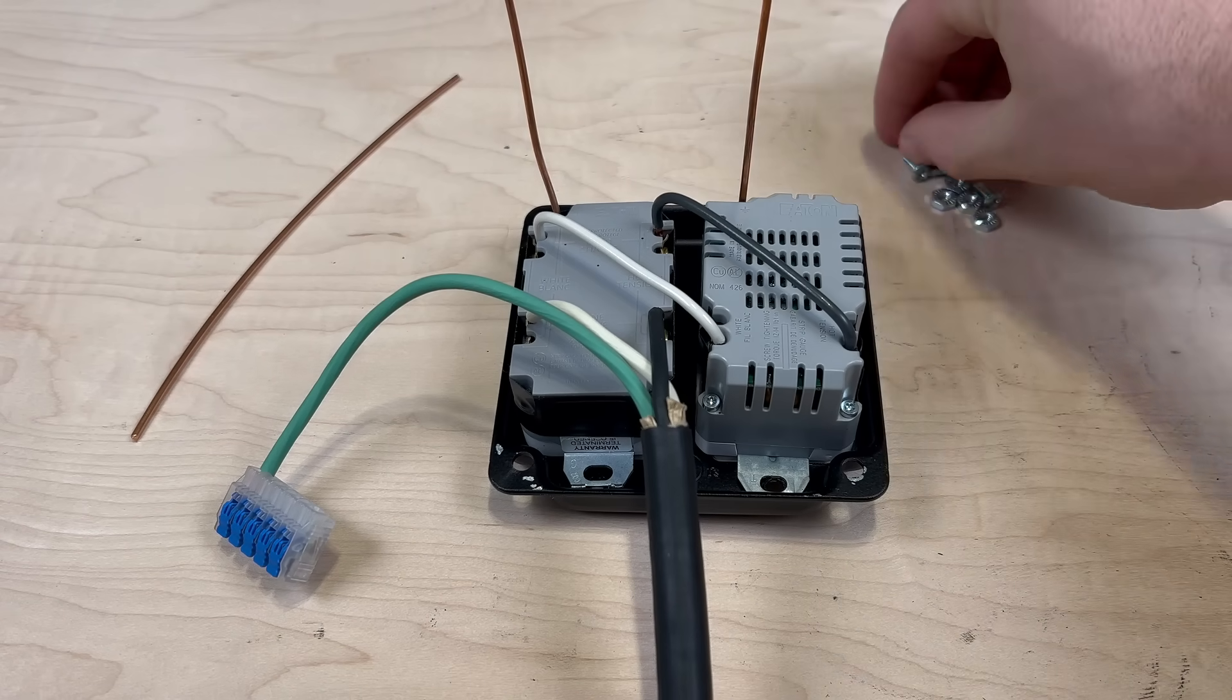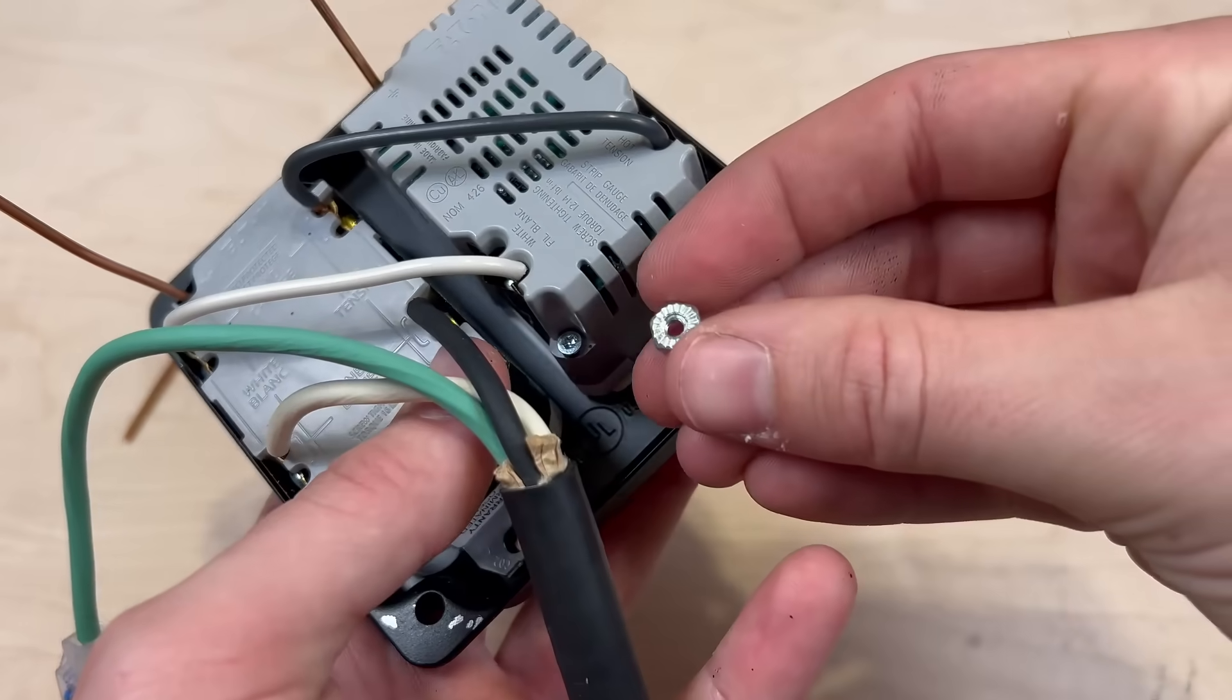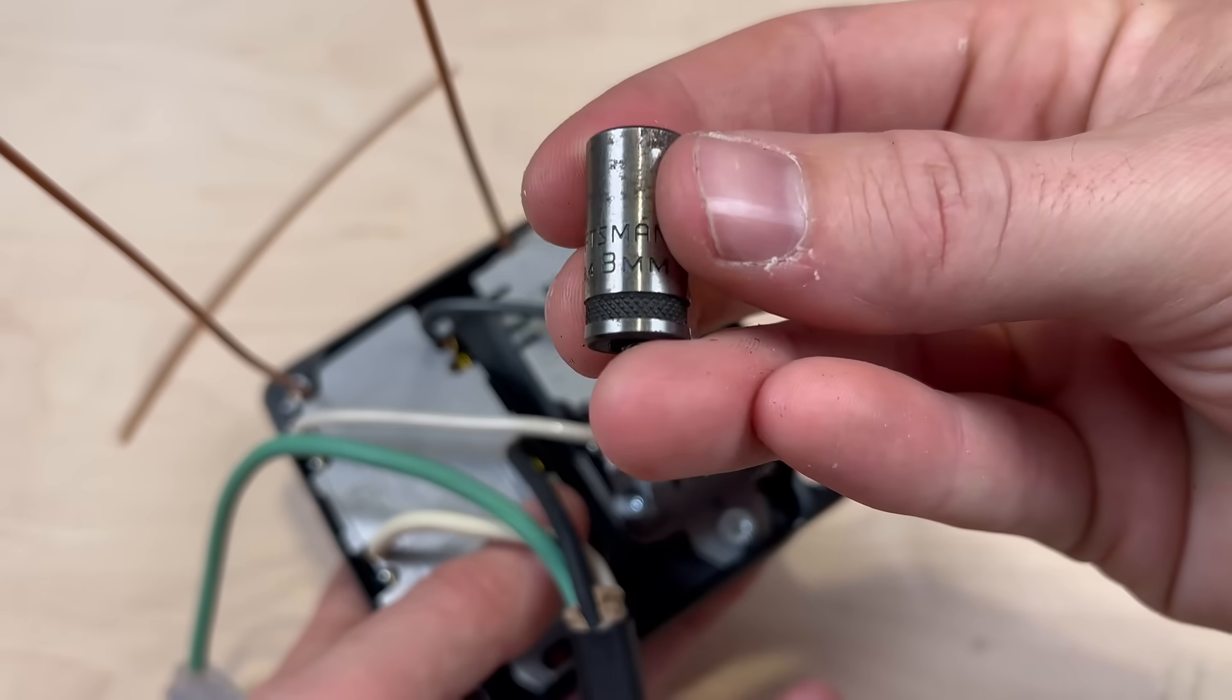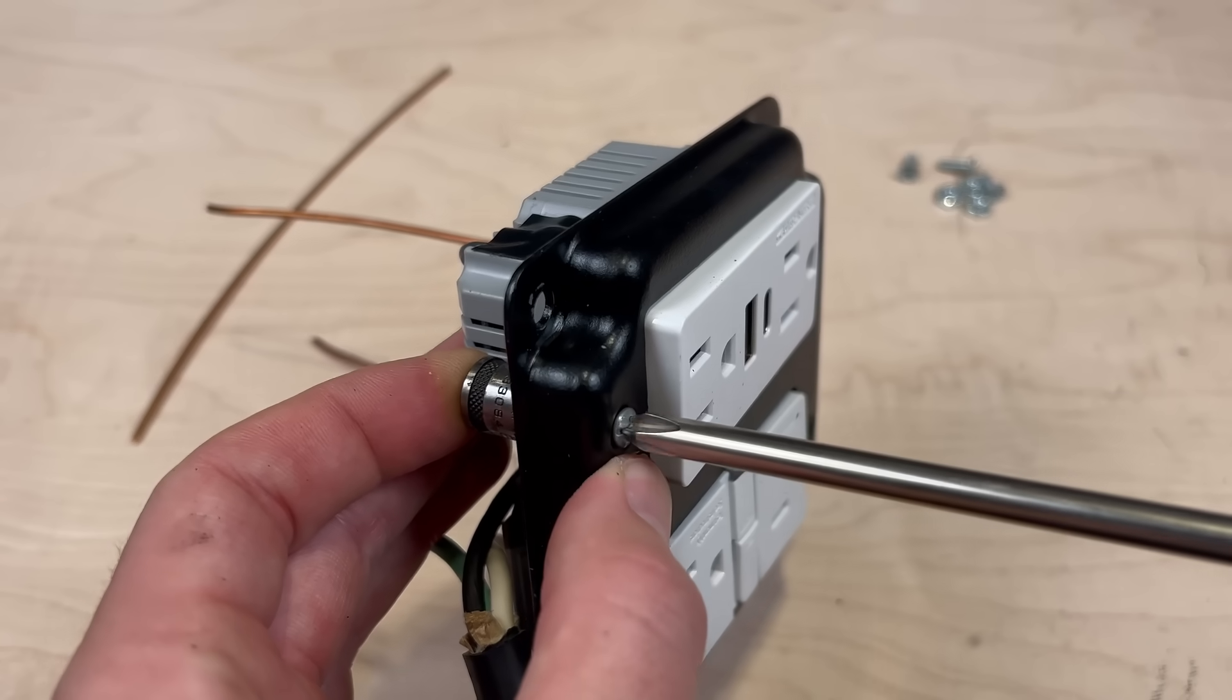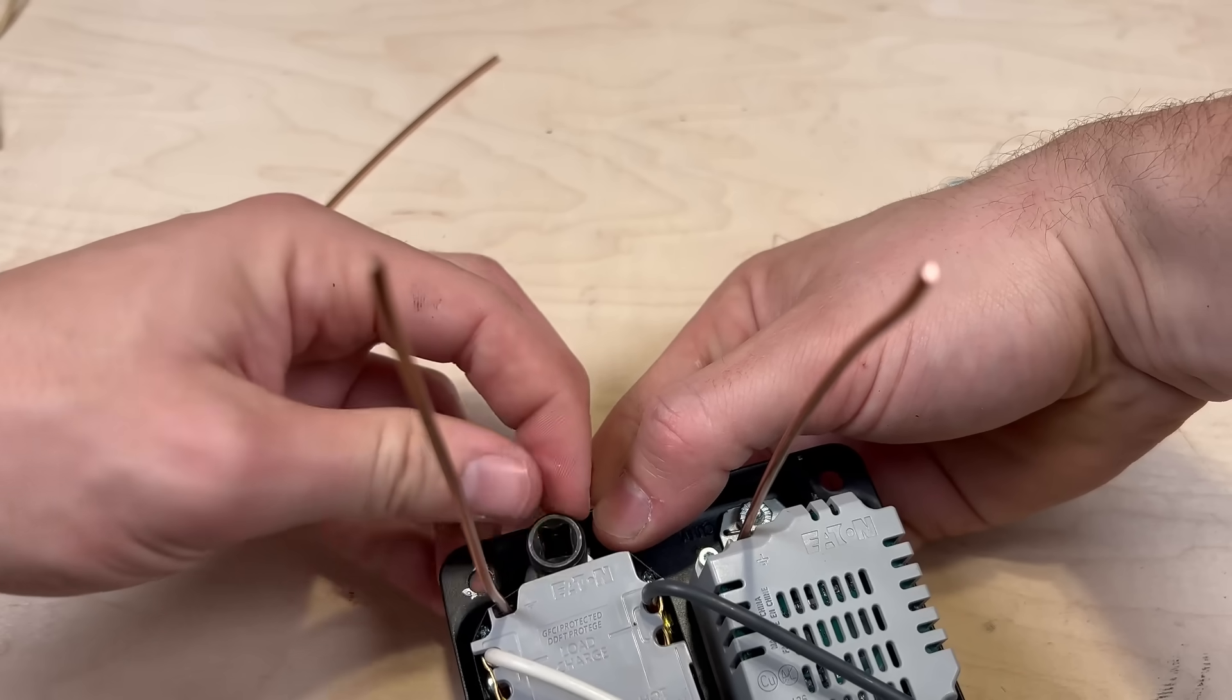Now that the bulk of the wiring is done, use the hardware that came with your cover plate to secure the outlets in place. To do this, I used an 8mm socket and a Phillips screwdriver. I didn't bother with a ratchet because these don't need to be super tight.